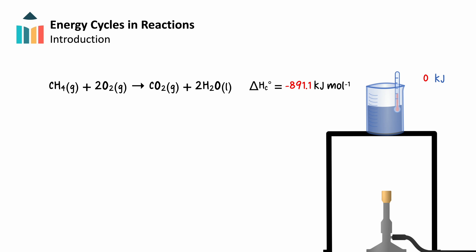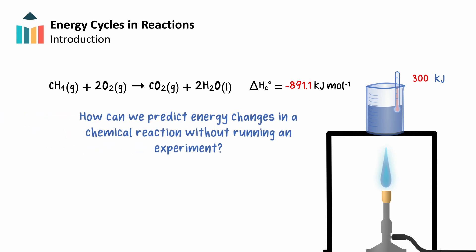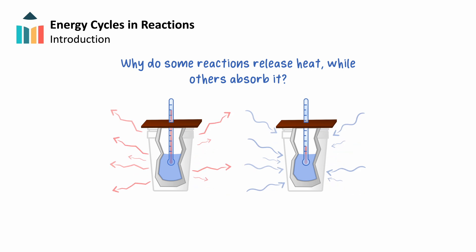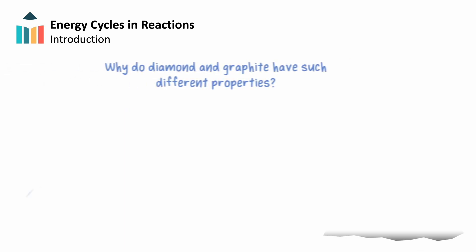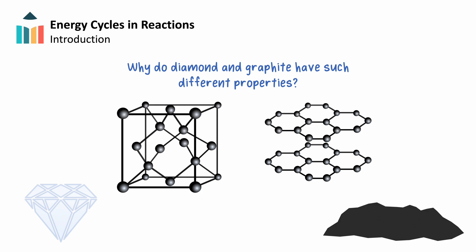Chemical reactions involve energy changes, but how can we predict these changes without performing an experiment every time? Why do some reactions release heat while others absorb it? And why do substances like graphite and diamond, both made of carbon, have such different stabilities? To answer these questions, we need to explore enthalpy changes and energy cycles.